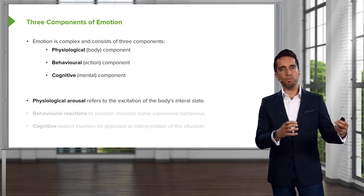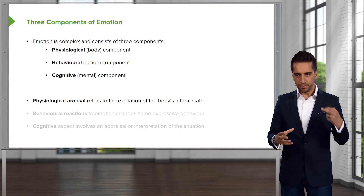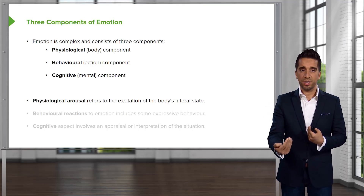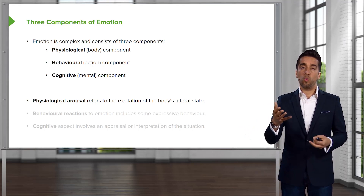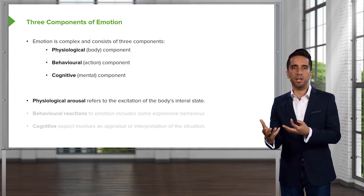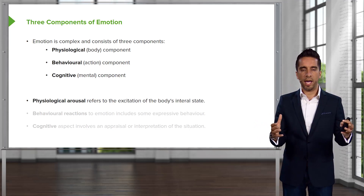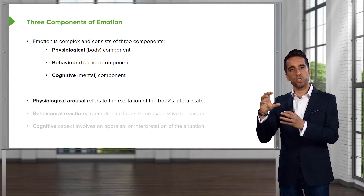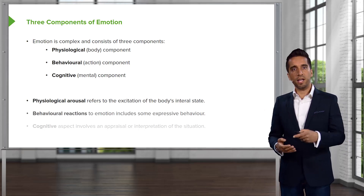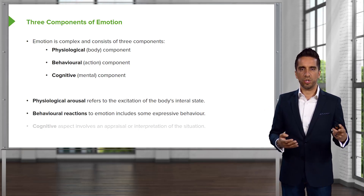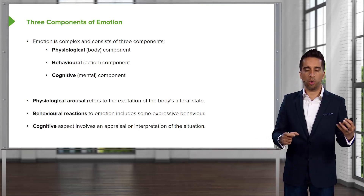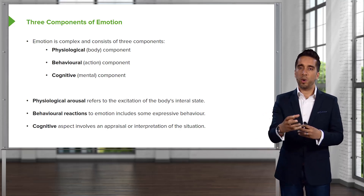The first component we're going to look at is physiological arousal. Physiological arousal refers to how it is that your body's internal state changes in response to that stressor. When you think of arousal, a lot of times you might think of sexual arousal, but what we're talking about here is a larger umbrella term. Sexual arousal would fall underneath that, but we're talking about things beyond that as well. The second are the behavioral reactions to emotion, which includes how we express our behavior. And then finally, the cognitive aspect involves how we're going to interpret the situation that's in front of us.